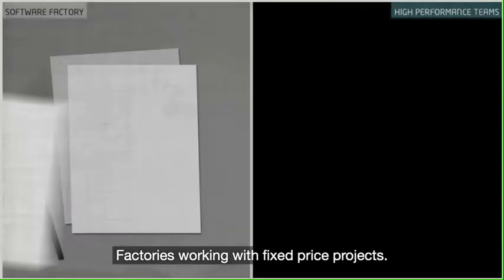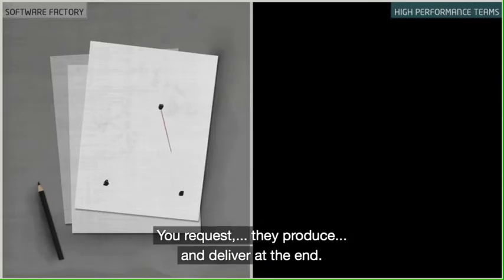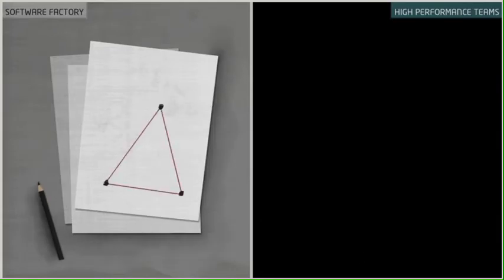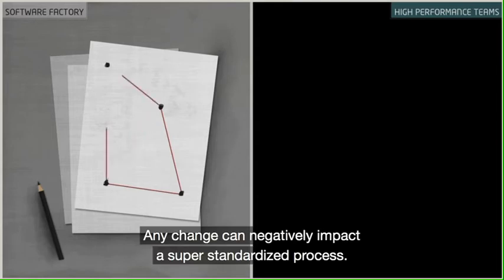Factories work with fixed price projects. You request, they produce and deliver at the end. Any change can negatively impact a super standardized process.